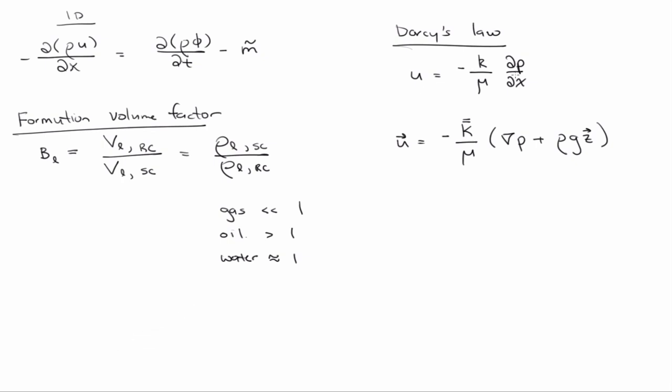So if I now use Darcy's law, plug it in for the velocity there, at the same time, I'm going to divide both sides of the equation by one over the density under standard conditions. Because this density is the density of what we're solving for, we're solving the equation under reservoir conditions, right?